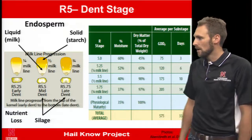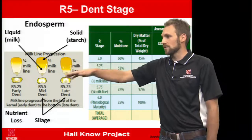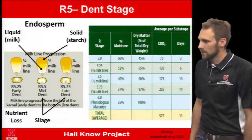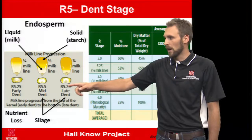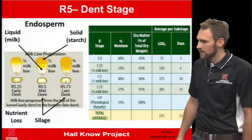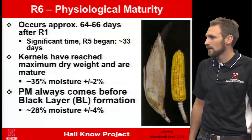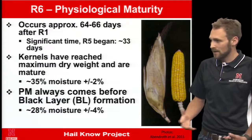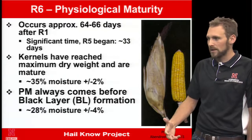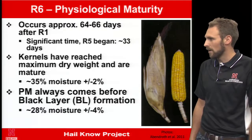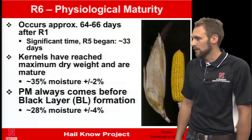R5 is divided into sub-stages based on the milk line — three-quarter and half — measured from the top of the kernel down. If you receive hail and consider silage, your silage options target the R5.5 and R5.75 stages. The last stage is physiological maturity, roughly two months after R1. At this point all nutrients have been assimilated into the plant, and it's very hard to cause yield losses from frost. You're essentially looking at direct kernel loss only if hail occurs during this period.